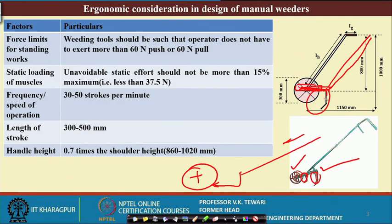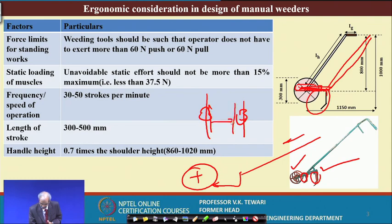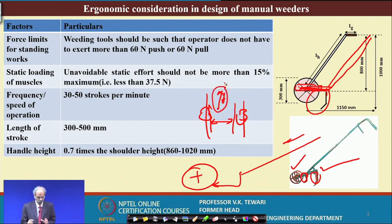These devices are push-pull type — we push a certain distance and then pull back a certain distance. I had shown you the mechanics of how push-pull force comes and how to measure those forces and find out the power required. Depending on the design, you can think of what should be the material of construction and what should be the width of cut, which depends on the row spacing of the crop.